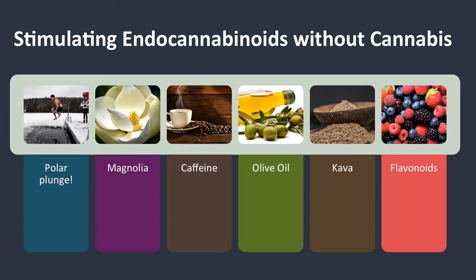So if you stimulate endocannabinoids without cannabis, how do you do that? You can do it with a polar plunge — this has actually been studied in humans, and the polar plunge increases endocannabinoids. Magnolia will do it. Caffeine increases endocannabinoids. Olive oil, kava, and flavonoids — specifically from berries — will also do it.